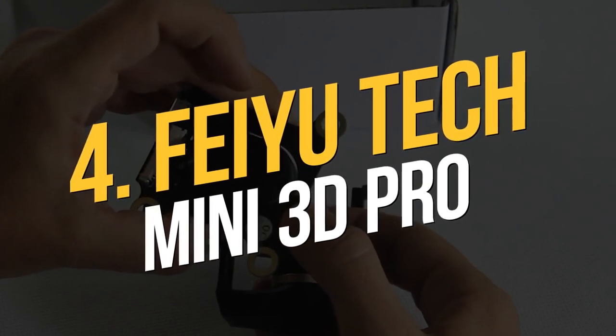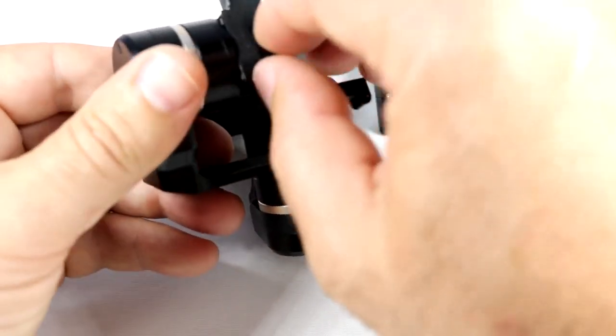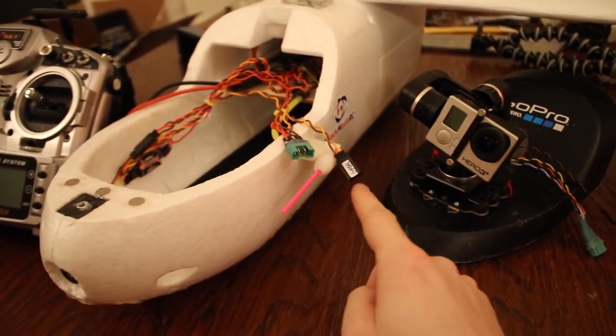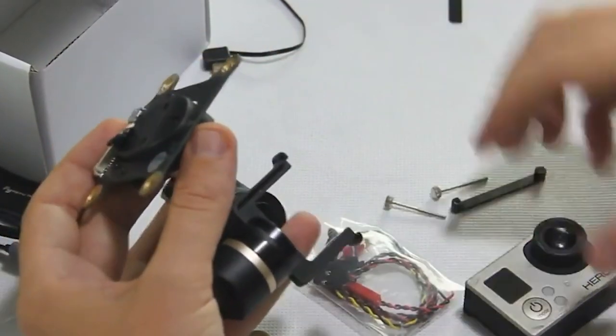Number four, Feiyu Tech Mini 3D Pro. Try the Feiyu Tech Mini 3D if you wish to analyze and test drone gimbals. It is simple to set up and run due to its small size. A metal frame offers stability and a secure drone gimbal configuration in the assembly.